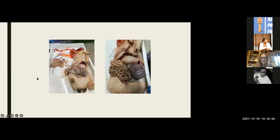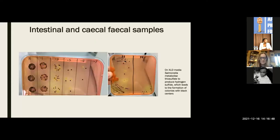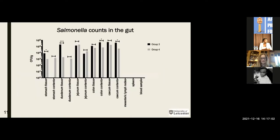Visually, the animals that had the salmonella phages in their feed had much less swollen intestines than those who didn't. Looking at the numbers when we enumerated the salmonella — which grows as black colonies on selective media — we can see that in most areas of the gut, the animals that had the phages had less salmonella colonisation, and that also translated to less disease.